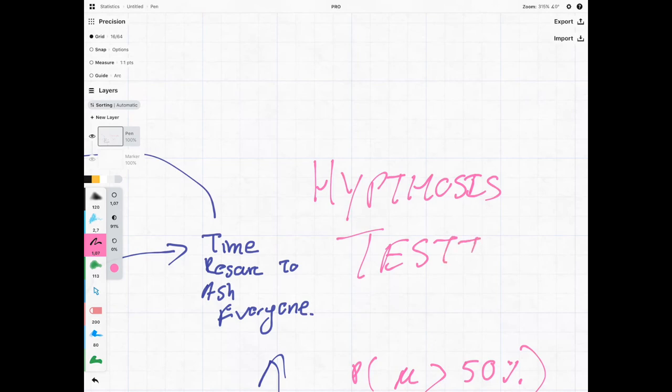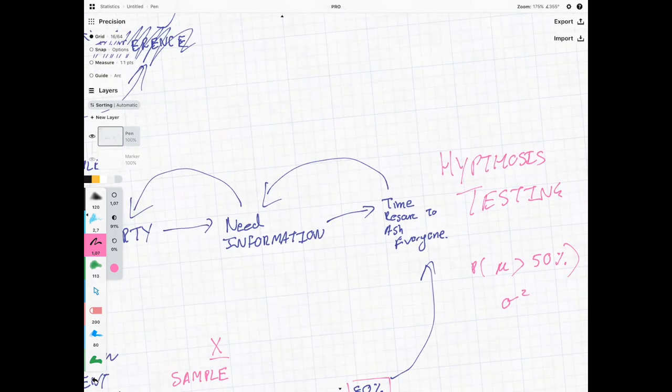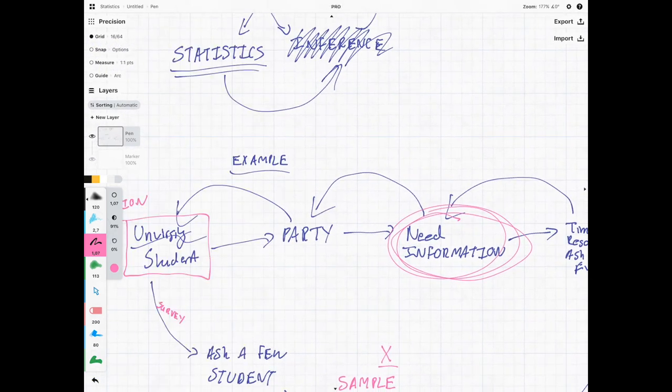But this delves into something known as hypothesis testing. And once we have hypothesis testing, we can use that to create information. And once we have that information, we can then make our decision on whether to have a party or not. There's no point throwing a massive party and people don't actually want to go to it. So you can actually save a lot of money and make the right decision when you understand statistics.